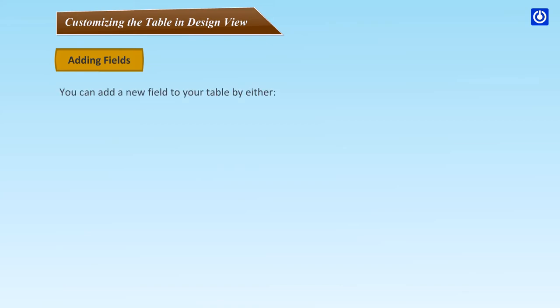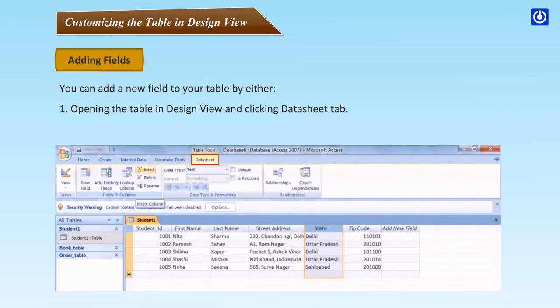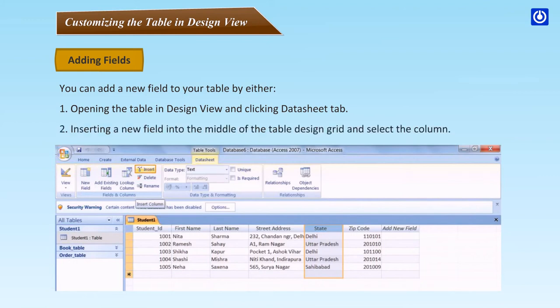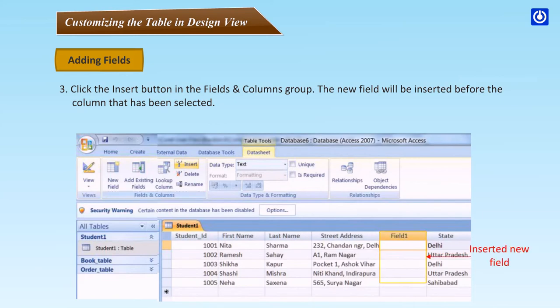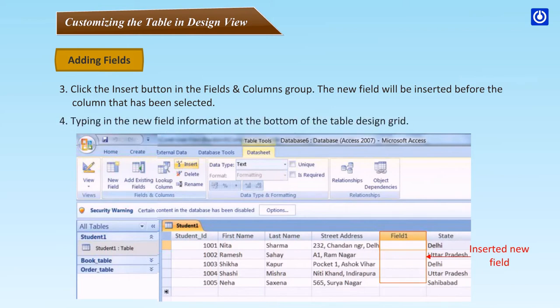Customizing the table in Design View - Adding Fields: You can add a new field to your table by opening the table in Design View and clicking the Datasheet tab, or inserting a new field into the middle of the table design grid. Select the column, click the Insert button in the Fields and Columns group. The new field will be inserted before the selected column. Type in the new field information at the bottom of the table design grid.